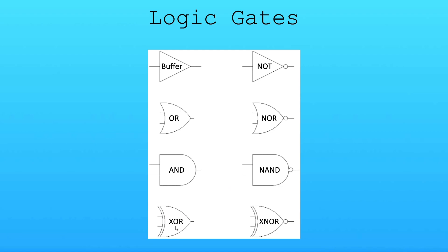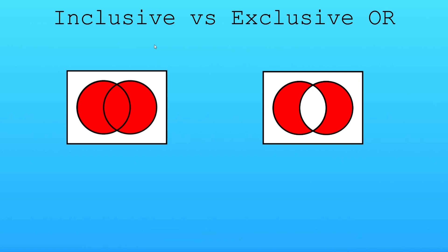Then we have an XOR gate, or exclusive OR. This is similar to the OR gate — also known as inclusive OR — however if both inputs are true, the output will be false because it's exclusive. Over here we have a simple inclusive versus exclusive Venn diagram. With inclusive OR, even if both inputs are on we always get an output, but with exclusive OR it's only one input or the other — if both inputs are on, represented by the middle circle, we won't get an output.